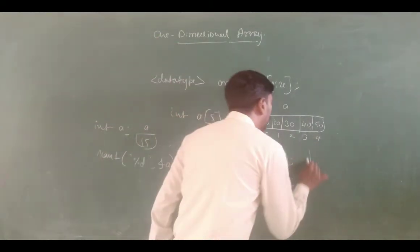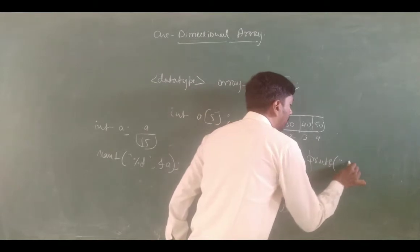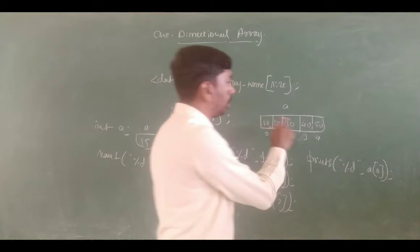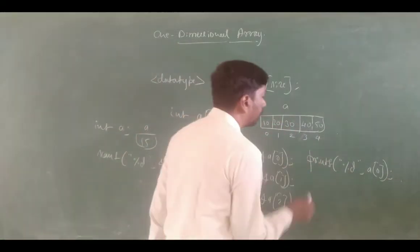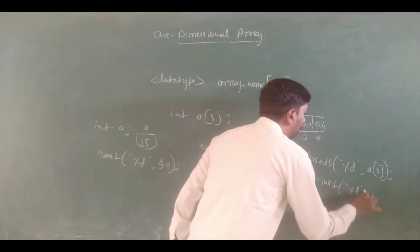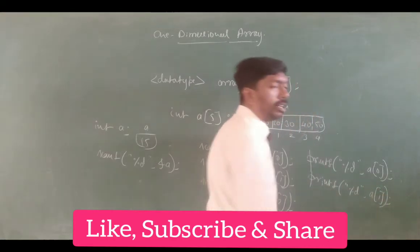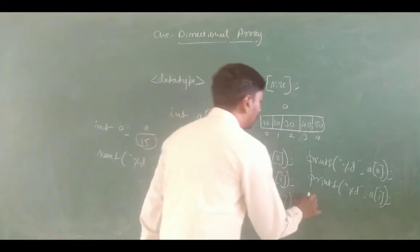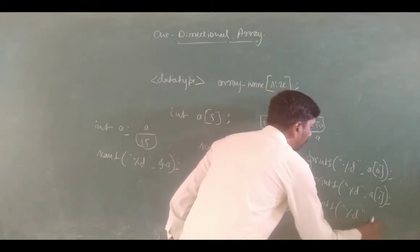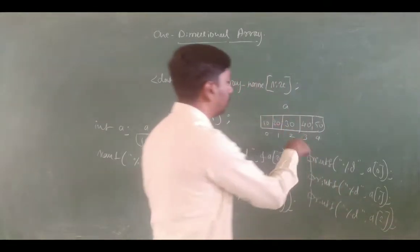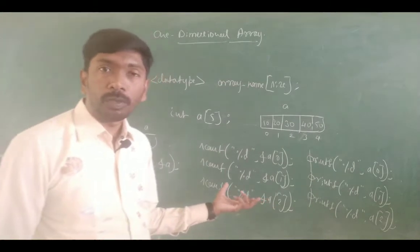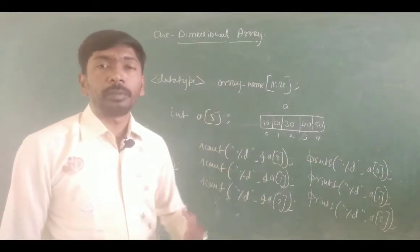To display, we use printf %d with A of 0. This is one dimension — a program that can accept 5 elements and display them.